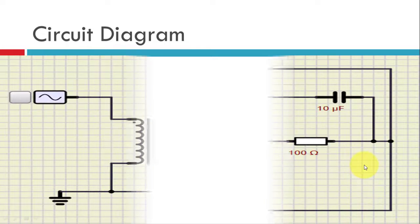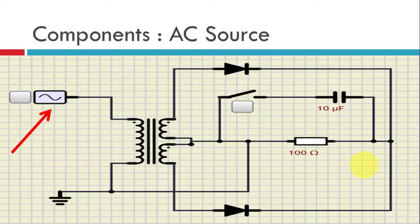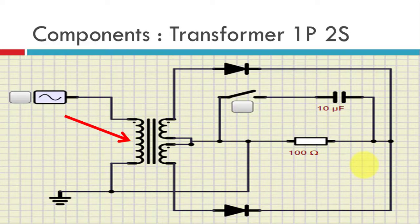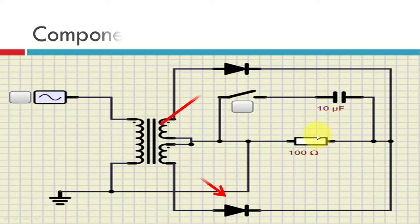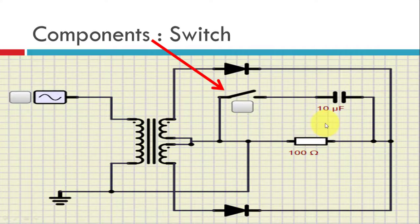So this is the circuit diagram. There are a few components. The very first component is the AC source, which will produce a sine wave. Then we have the transformer — a special type that has one primary and two secondaries. Then we have two diodes, the upper and the lower one. We also use a switch, which serves the purpose of connecting and disconnecting the capacitor acting as the filter.